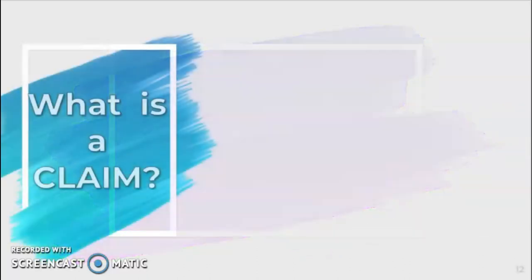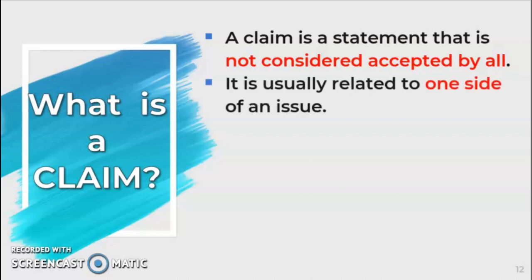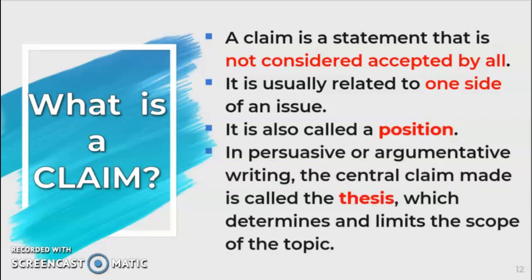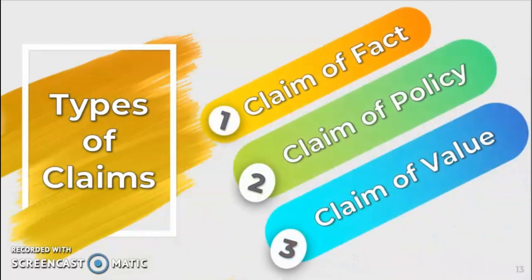So what is a claim? A claim is a statement that is not considered accepted by all — it is usually related to one side of an issue, and it is also called a position. In persuasive or argumentative writing, the central claim made is called a thesis, which determines and limits the scope of the topic. A claim may be unified or controversial to a certain degree. There are three types of claims: the claim of fact, claim of policy, and claim of value.